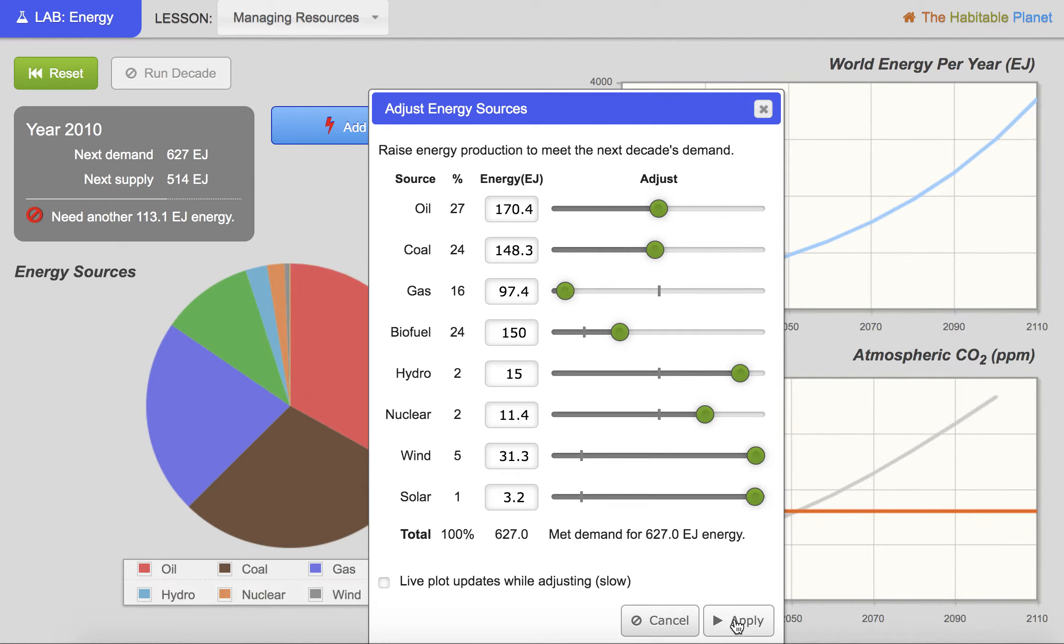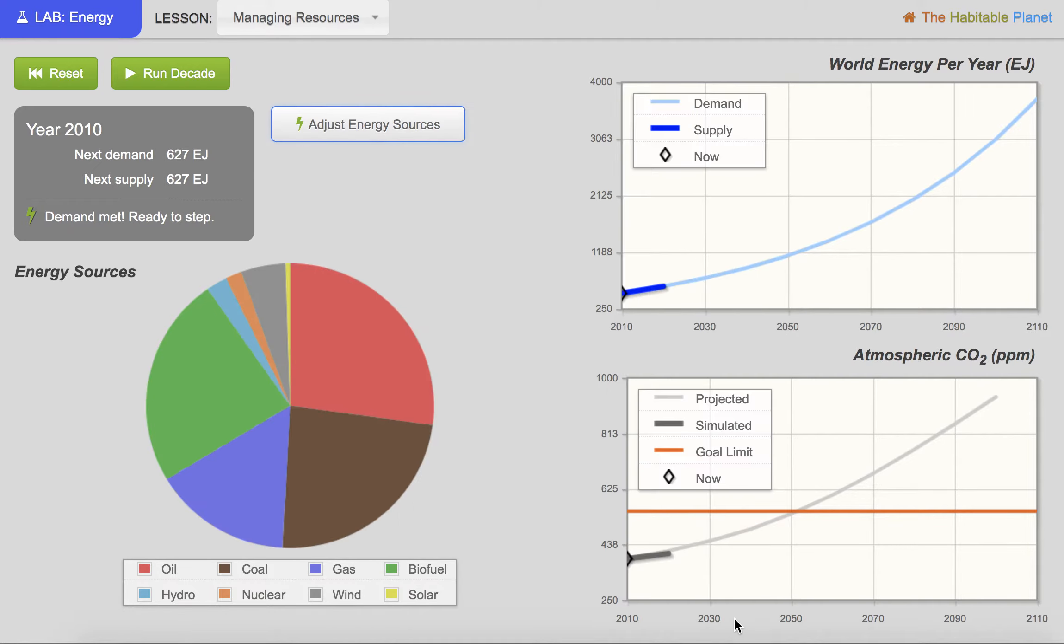Once you've done that, you're going to click apply and then run decade. So now that I've run this, you can see I've met that demand in the year 2020. And my current CO2 level is at 407 parts per million.